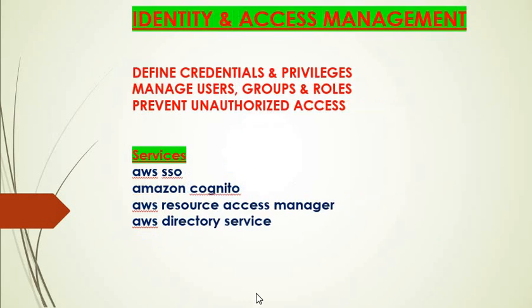Next is identity and access management. Here you can define credentials and privileges for different users, groups, and roles based on requirements. You can create different policies to prevent unauthorized access to your AWS resources, services, and account. Services include AWS SSO, Amazon Cognito, AWS Resource Access Manager, and AWS Directory Service.